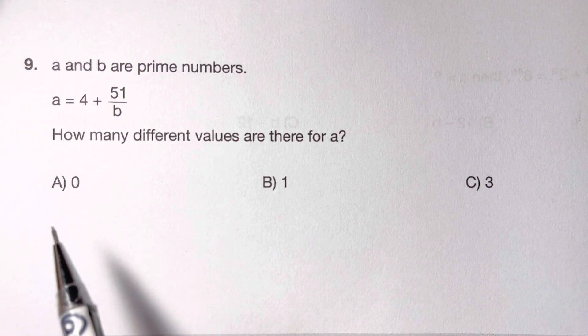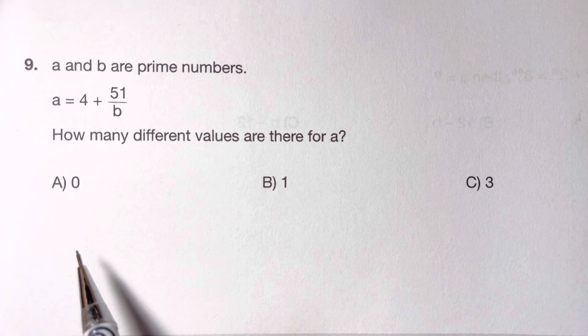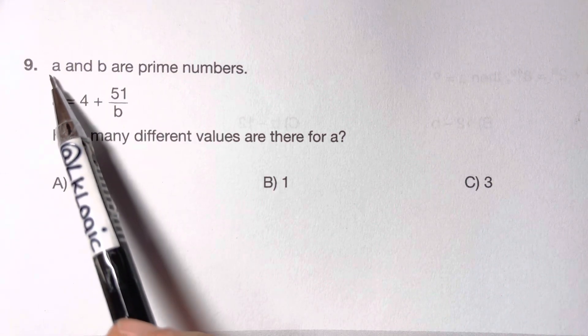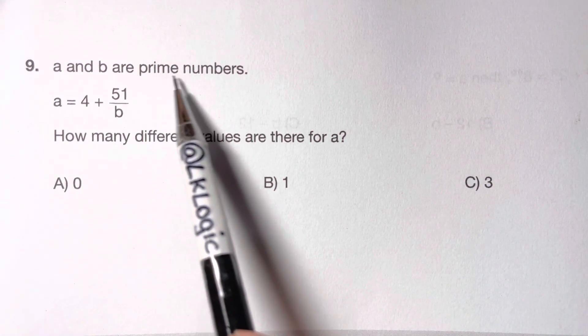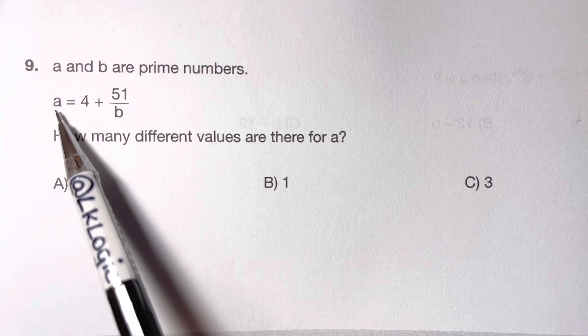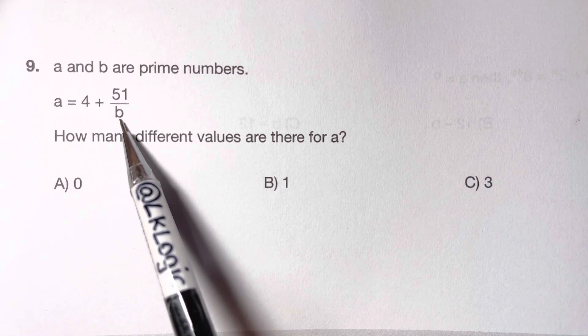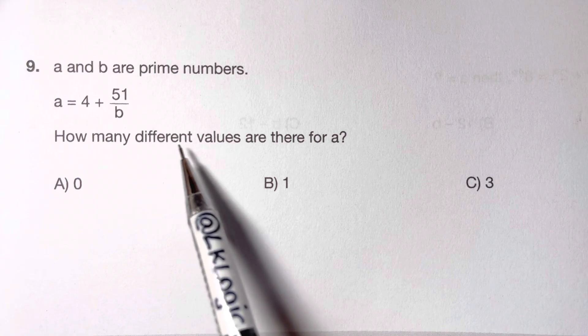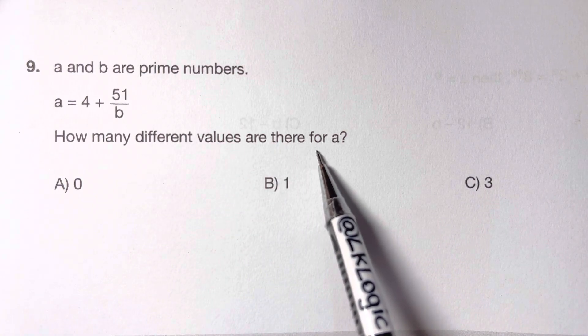Hi everyone, back with another Math Olympiad question which says A and B are prime numbers. A equals 4 plus 51 over B. How many different values are there for A?